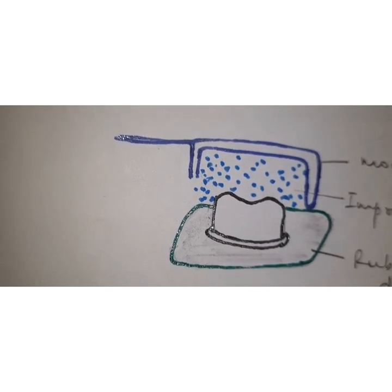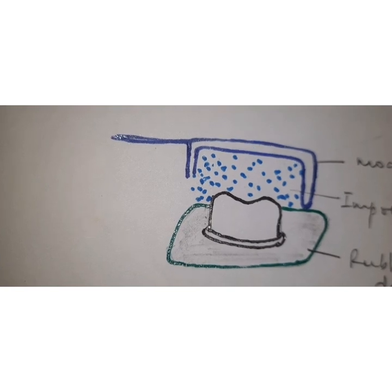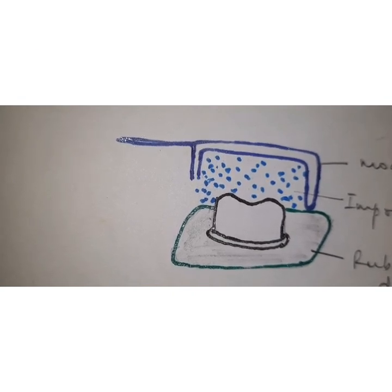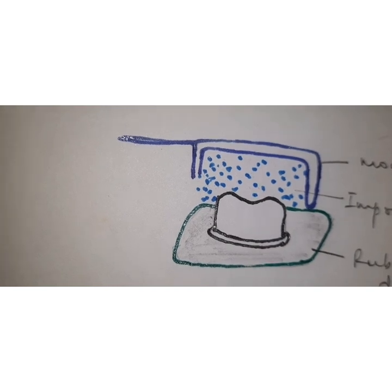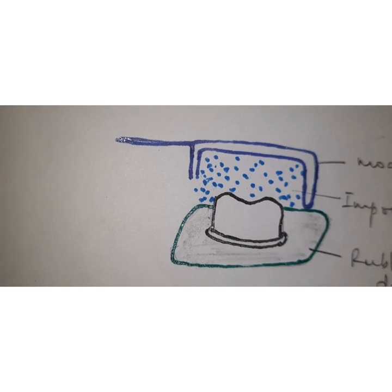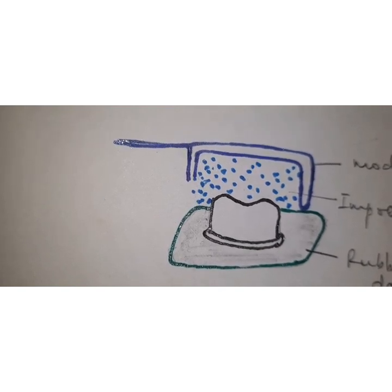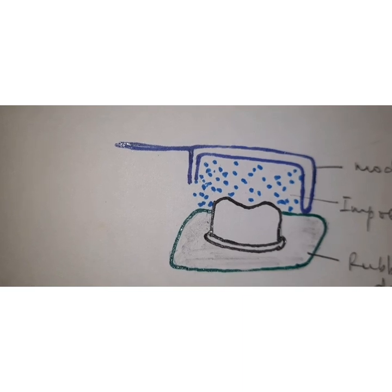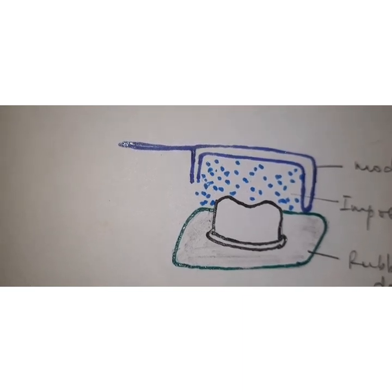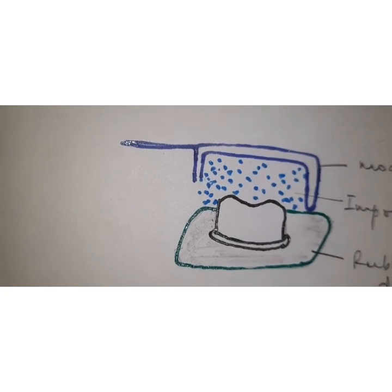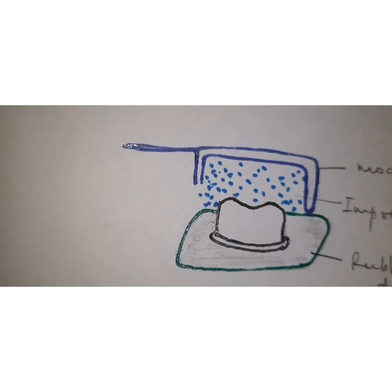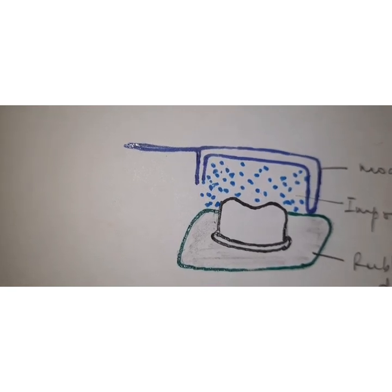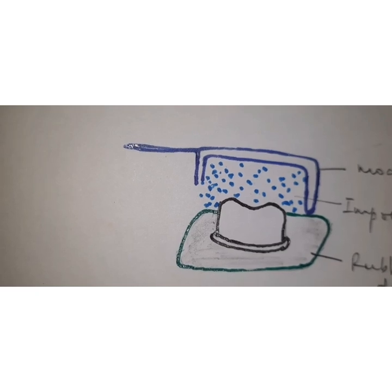Another mechanical retraction method is using plain cotton cords. These are non-impregnated gingival cords used to push away the gingival from the tooth surface to expose the finish lines. Their effectiveness is limited because it is based on pressure application only. It is difficult to control bleeding because applying pressure on the tissues can damage them, and sulcular bleeding then becomes an issue before making impressions.